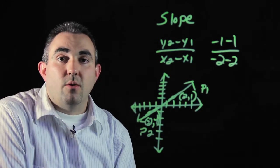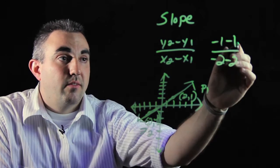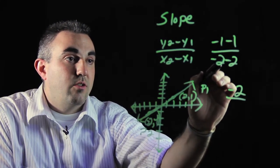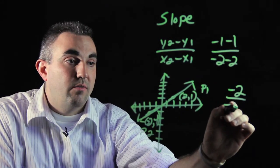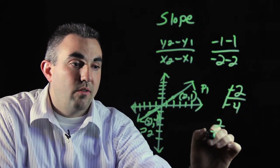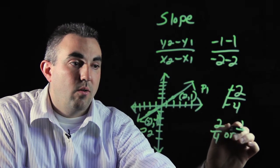Now you want to take this and solve it out. Solve the top, negative 1 minus 1, negative 2. Negative 2 minus 2, negative 4. Negative on top of a negative cancels out. And you're left with 2 over 4, or 1 half.